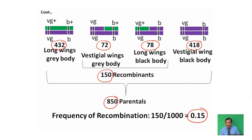The parental types are long wings, grey body and vestigial wings, black body. The recombinant frequency is 0.15 or 15%, and from this frequency it indicates that the two genes — that is, black body and vestigial wings — are linked.